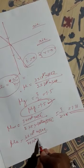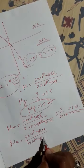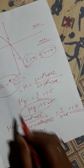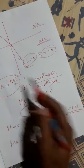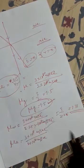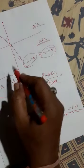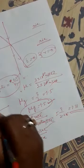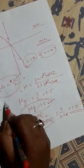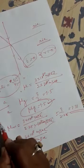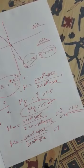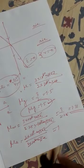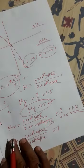Refractive index of air: speed of light in vacuum is 3×10⁸ meter per second, and speed of light in air is also 3×10⁸ meter per second. Using the formula, these cancel out, giving refractive index of air equal to 1.